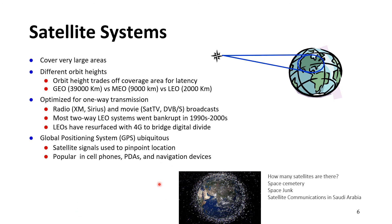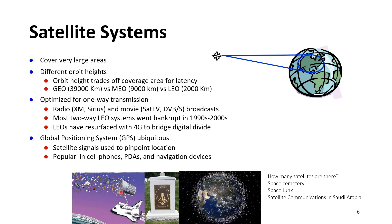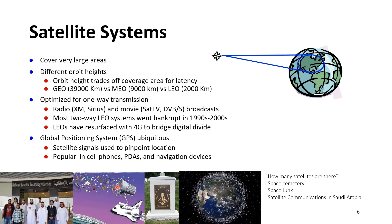Satellite systems are optimized for one-way transmission like radio, TV, and digital video broadcasting. Mobile satellite systems went into bankruptcy in the early 1990s and 2000s, but are now coming back. Low earth orbits have resurfaced with 4G to bridge the digital divide in areas like mid-ocean where base stations aren't easily deployable. There are about 20,000 satellites, and after about 15 years of service they must be retired, contributing to the problem of space junk. In Saudi Arabia, we have the National Satellite Technology Center — please visit their website for more.